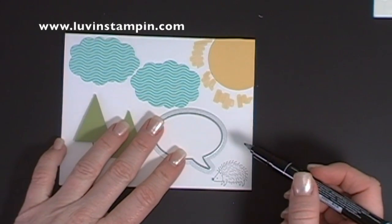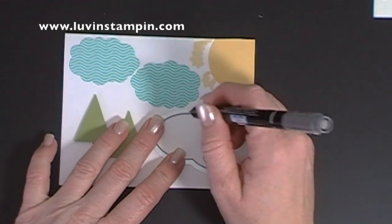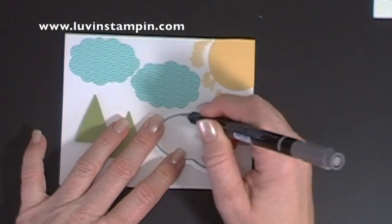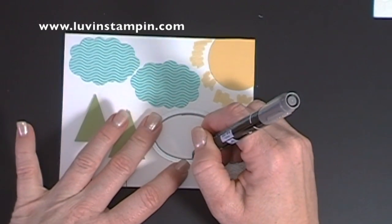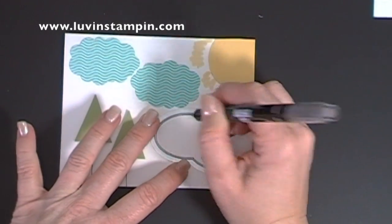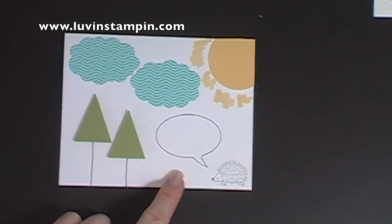And I'm going to hold very gently my framelit down, and I'm just going to trace right around the inside of my framelit. So then I have a talking bubble.